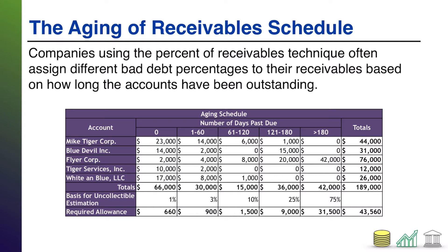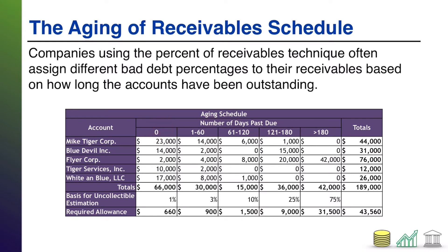Essentially the buckets represent the age of the receivables — how old are those receivables? In the example I have here: zero days, meaning they aren't late yet. Notice the header says 'number of days past due,' so zero means it's a receivable customers owe us, but customers still have time to pay before they're even late. Then the next bucket is one to 60 days late, next is 61 to 120, then 121 to 180, and finally greater than 180, regardless of how much greater.